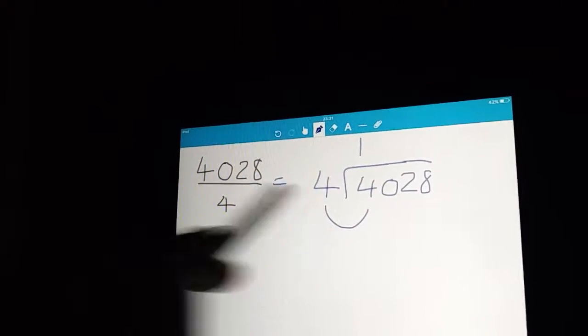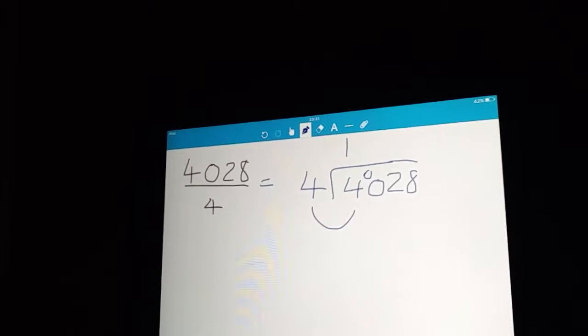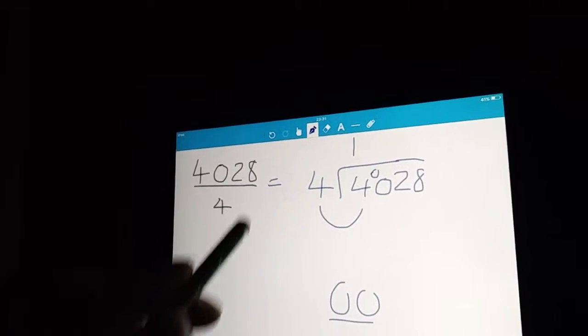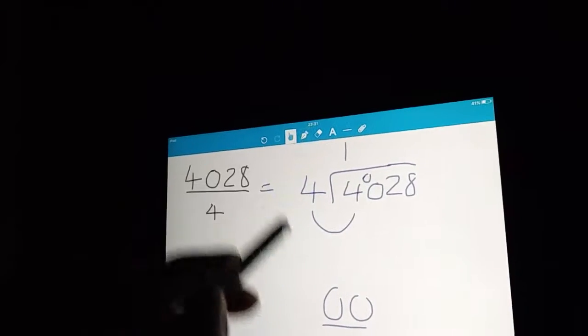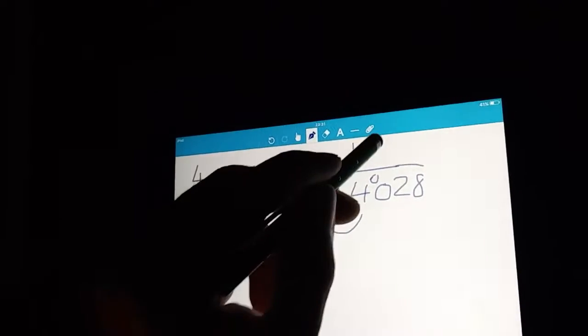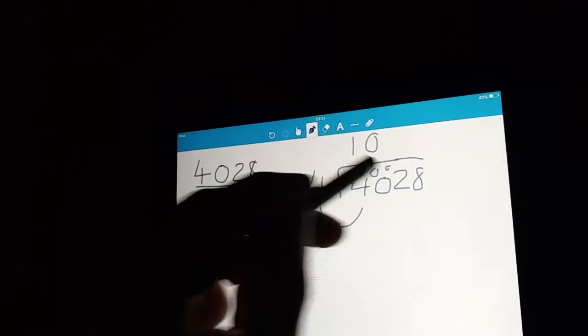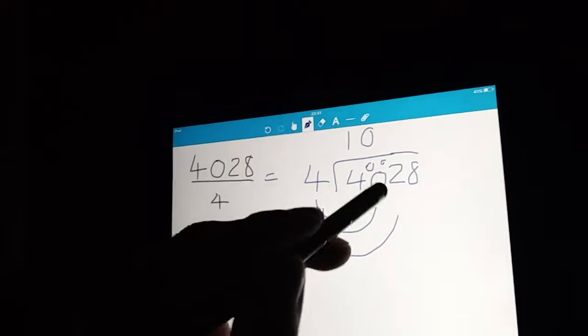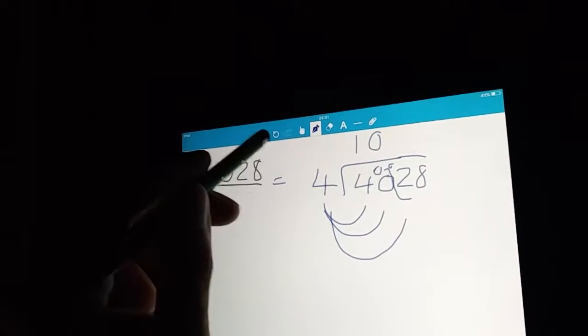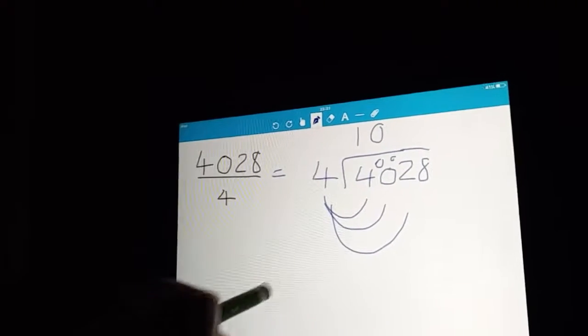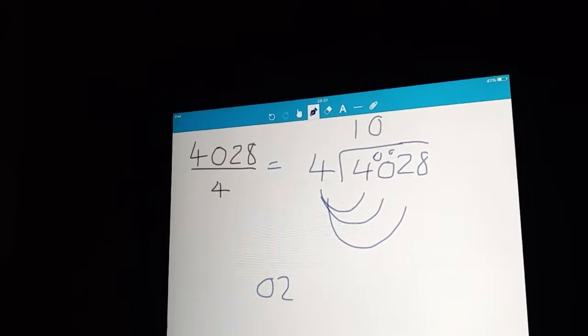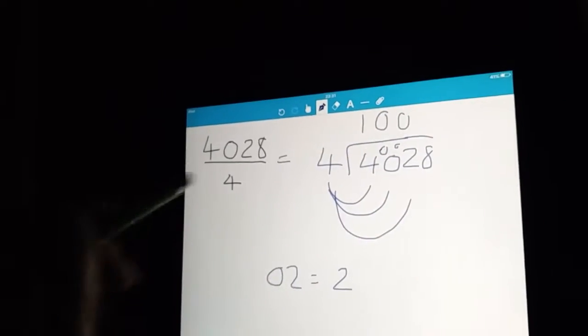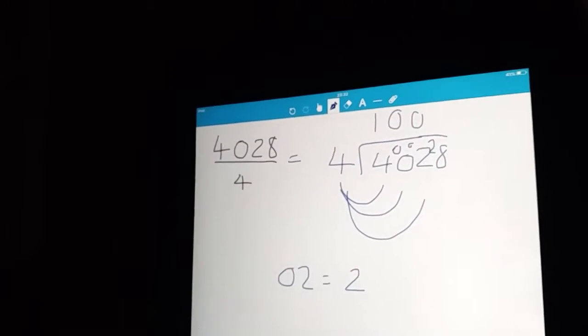So how many 4s go into 4? Well that's 1. Carry the 0. How many 4s go into 0? That's 0, and there's no remainder once again. Still same question. How many 4s go into this number? You read the remainder and the number next to each other. So this is really saying how many 4s go into 02. Well, 02 equals 2. So how many 4s go into 2? That's 0, and the remainder's 2. And that carries on again.